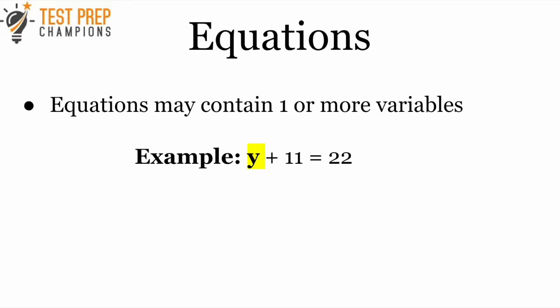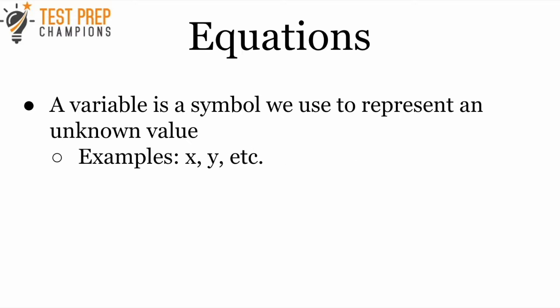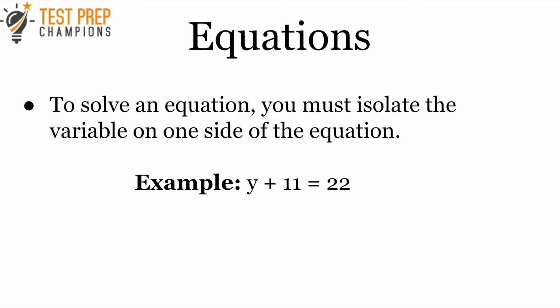You might be wondering: what is a variable? A variable is a symbol we use to represent an unknown value — X, Y, A, B, for example. To solve an equation, you must isolate the variable on one side. In this case, Y plus 11 equals 22, so the name of the game is to get Y by itself.